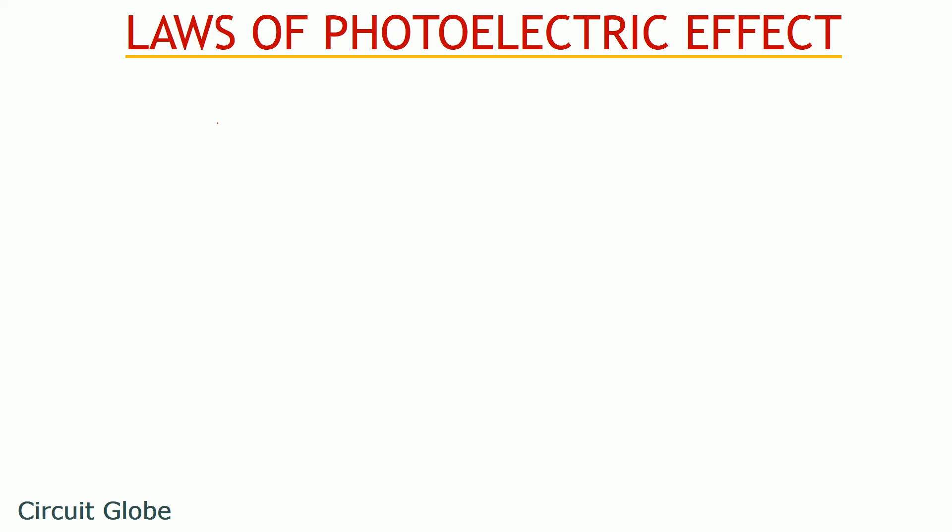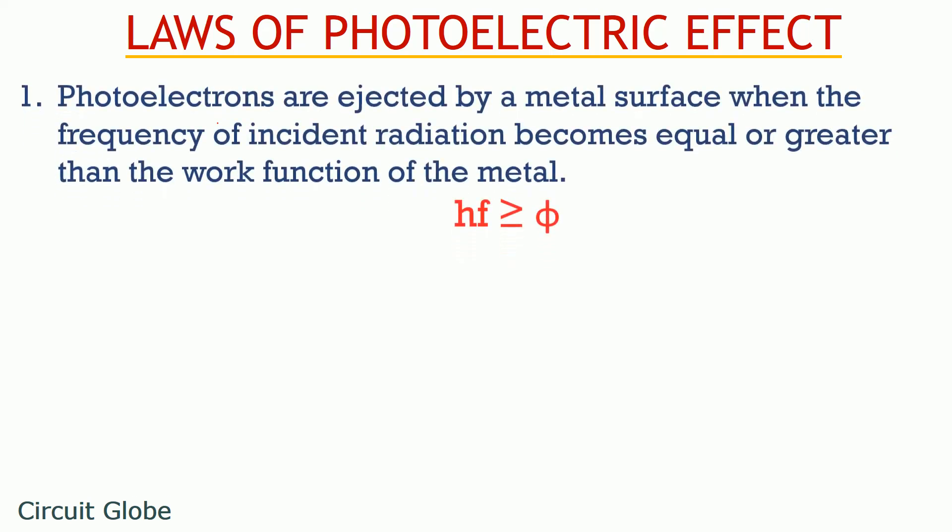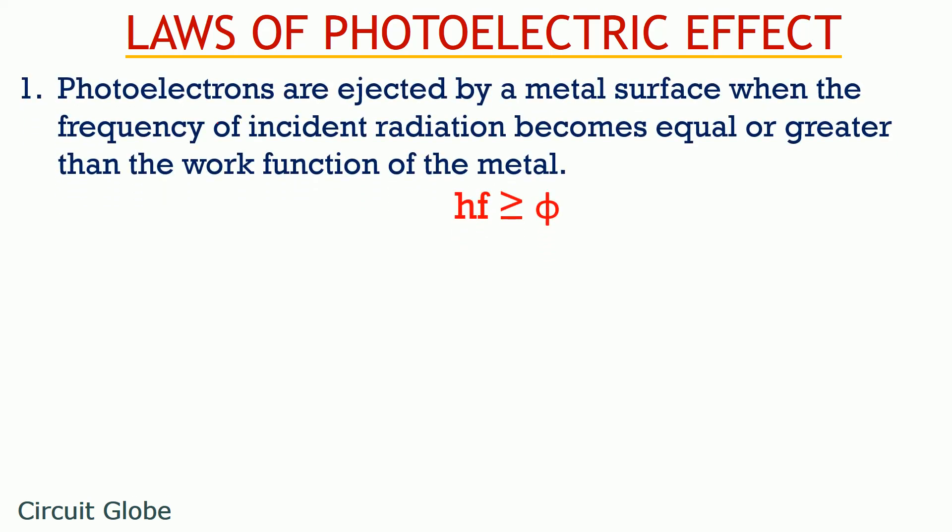We have recently discussed the first law which states that photoelectrons are emitted or ejected by the surface of the metal only when the frequency of incident radiation becomes either equal or greater than the work function of the metal. Here, phi represents the work function of the metal, H is the Planck's constant and F is the frequency of the incident photon. And we have already discussed the reason behind this particular law.